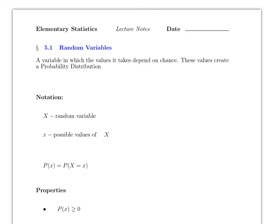Hello everyone, this video covers Section 5.1: Random Variables. From now on, the whole semester is going to be based on random variables. Like we talked about in Chapter 1, there are two kinds of variables: discrete and continuous. There is also qualitative, but we will focus mainly on discrete and continuous. Section 5.1 is about discrete random variables. Random variables are sometimes just called random distributions, so when you hear the word distribution or variable in the context of random variables, it will mean the same thing.